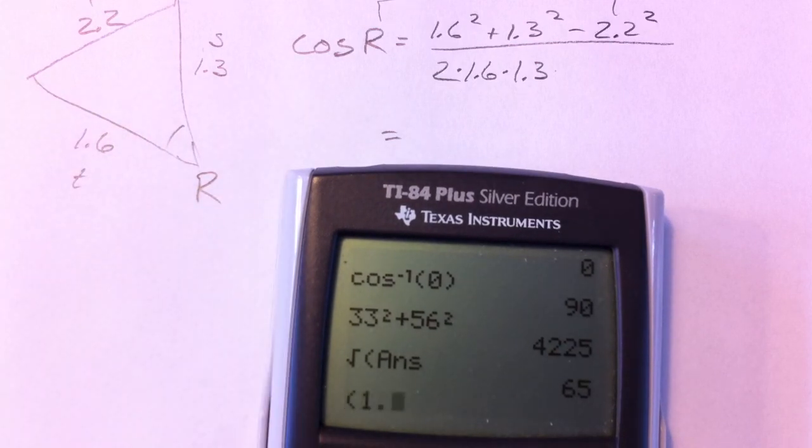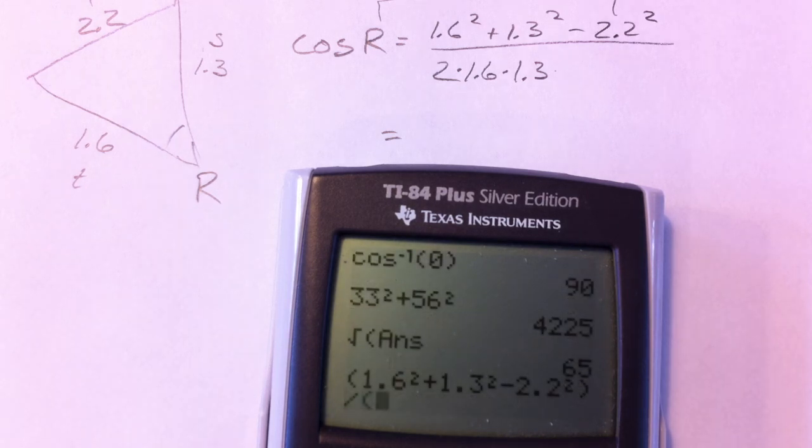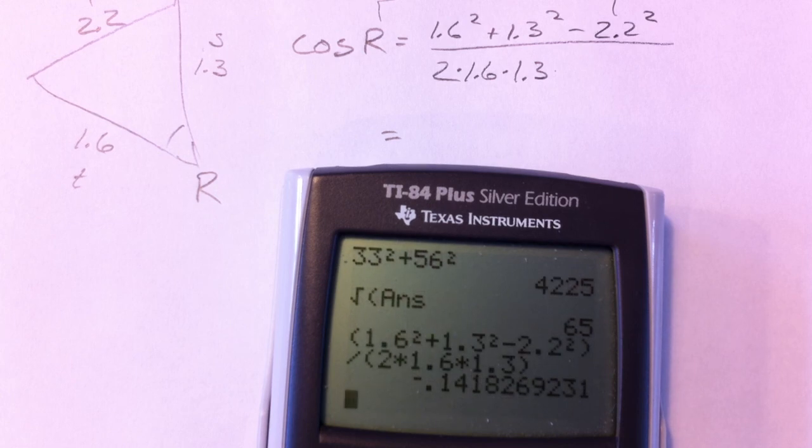So 1.6² plus 1.3² minus 2.2². That's all in parentheses up top, parentheses in the bottom. 2 times 1.6 times 1.3. So we have a cosine value that's negative.